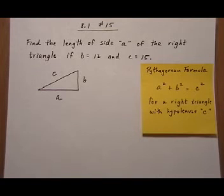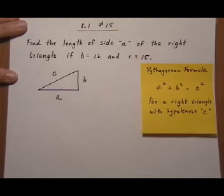8.1, number 15. Find the length of side A of the right triangle if B equals 12 and C equals 15.